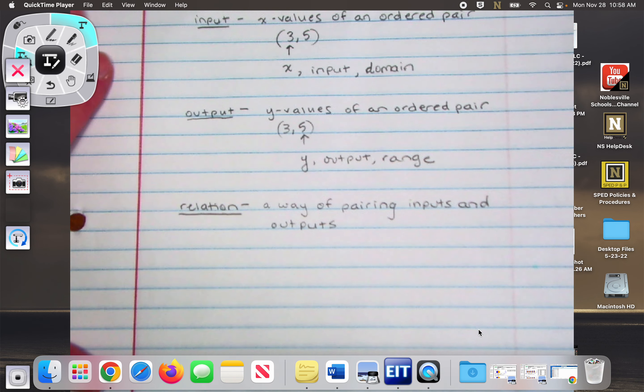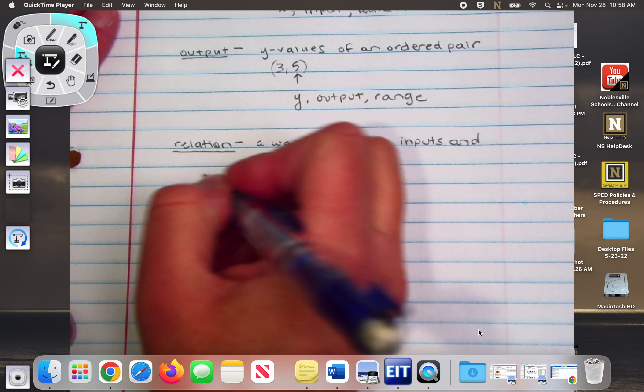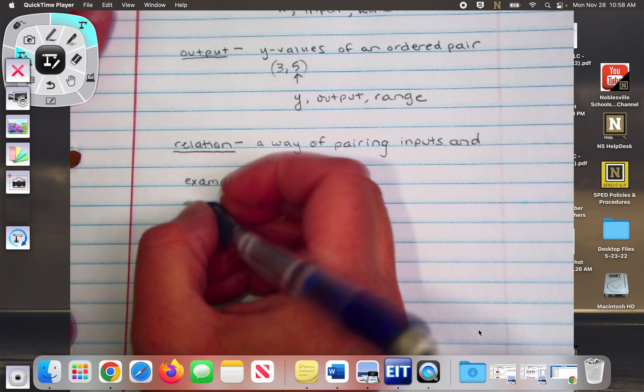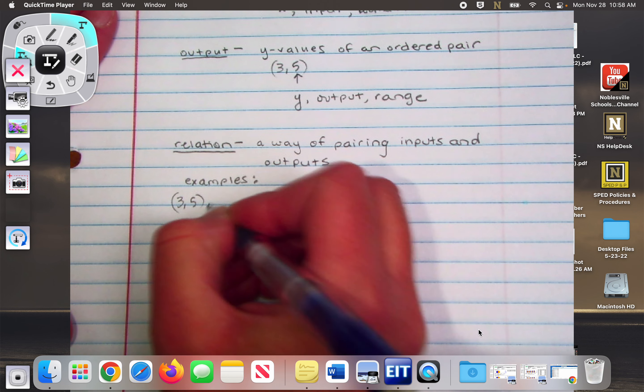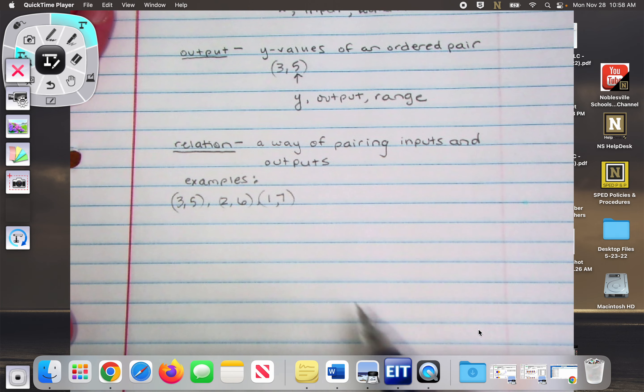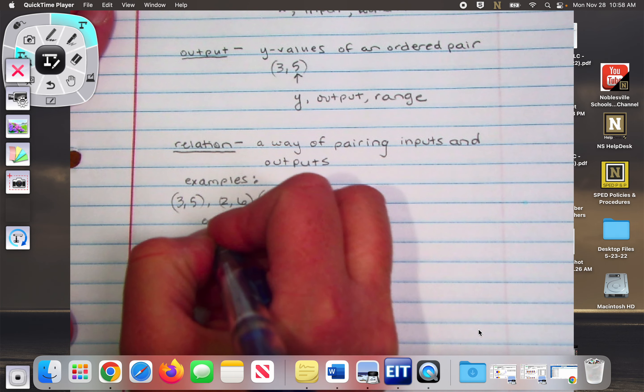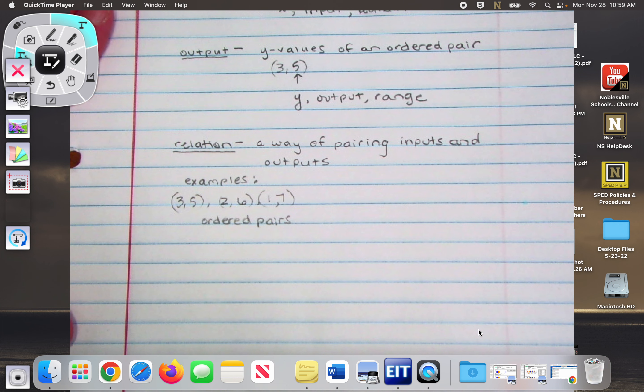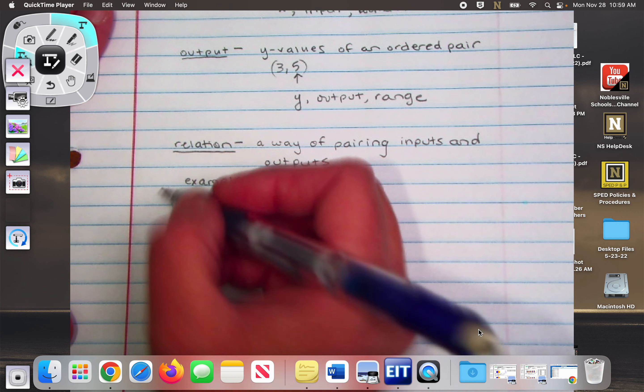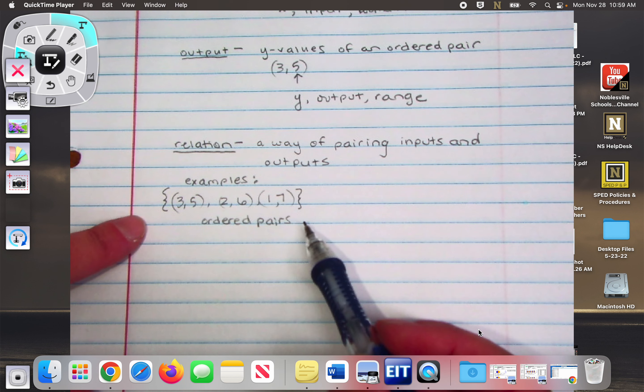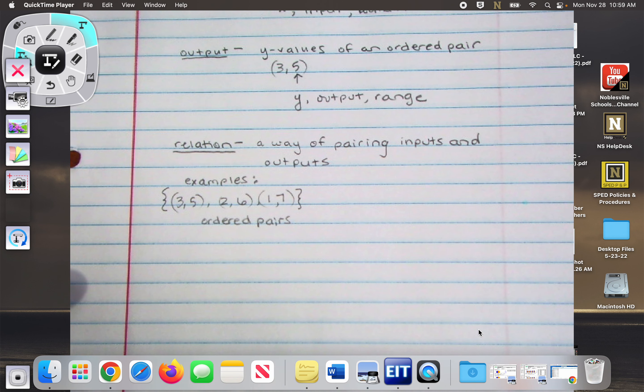Okay, so some of our relations, we're going to do some examples. We could have ordered pairs, like (3, 5), (2, 6), (1, 7). So we could have ordered pairs. And the way we show it's a relation is we do these funky little brackets at the ends. See those funny little brackets? It's like my brain sometimes. Right. A funky little bracket? Yeah. Okay.